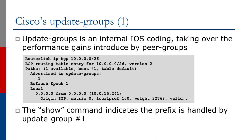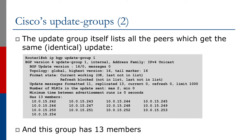Update Groups are an internal IOS coding improvement that takes over the performance gains introduced by Peer Groups. The router software works out which neighbors share the same outbound policy and groups them together. You can find out the status of update groups on an IBGP-speaking router by looking at the prefix in the BGP table. You can also list all peers which belong to a particular update group — a router may have a few update groups, and you can list them all by group number to see which neighbors are members of each group.